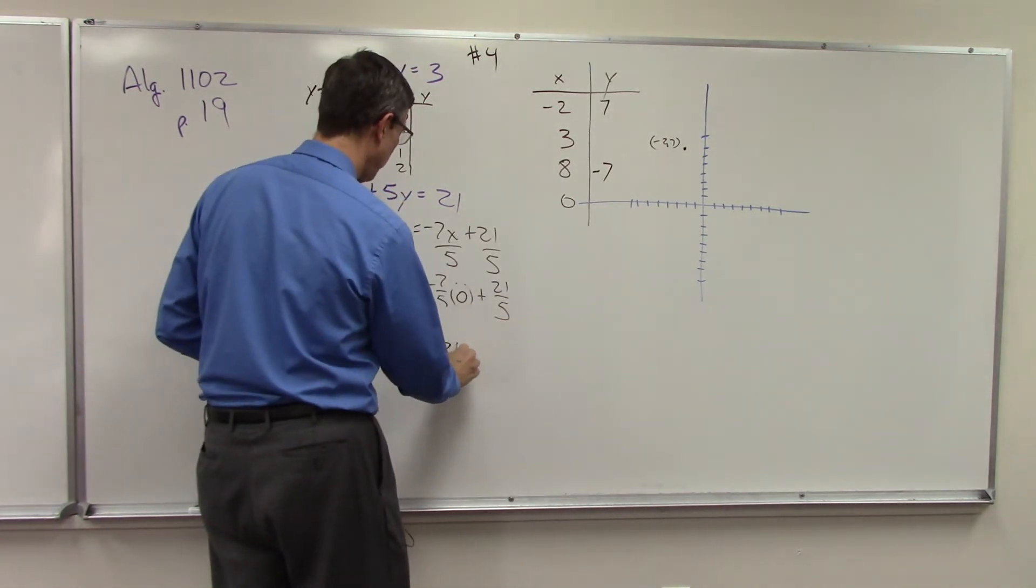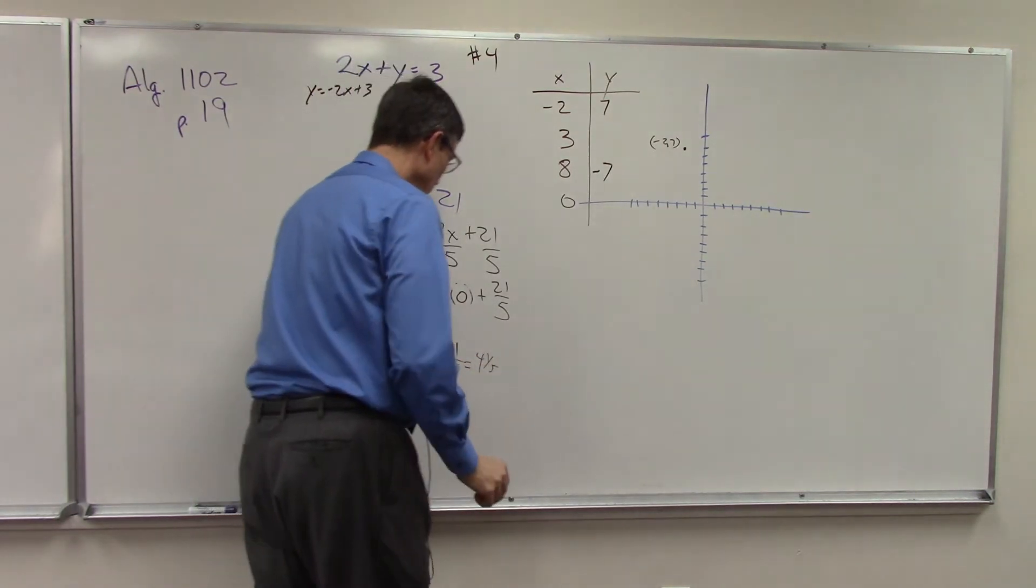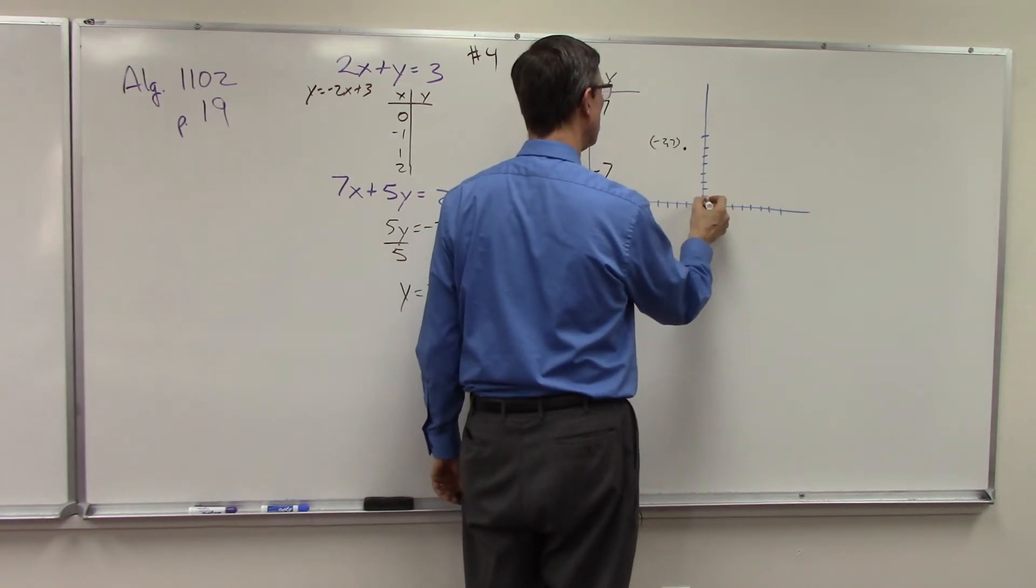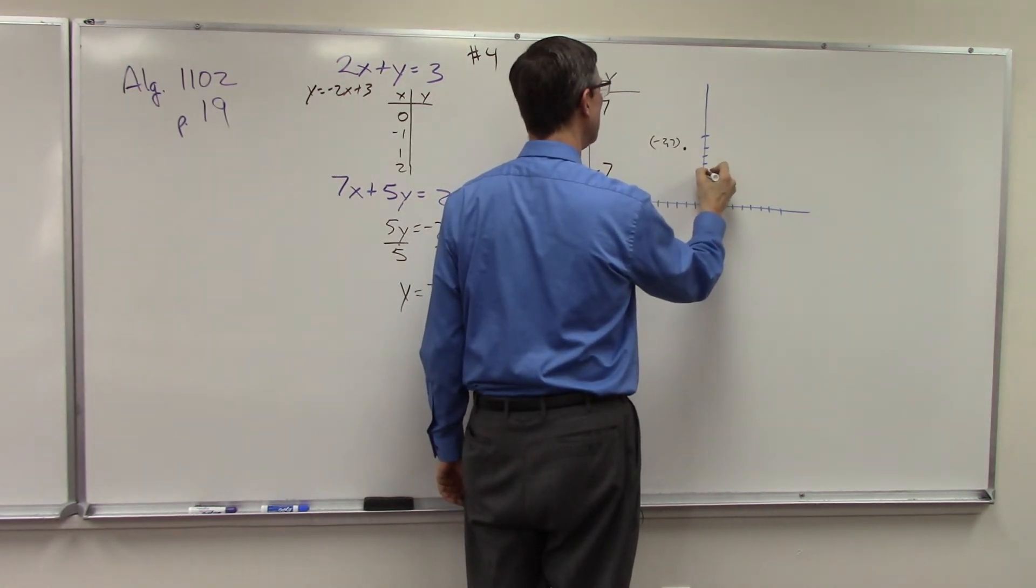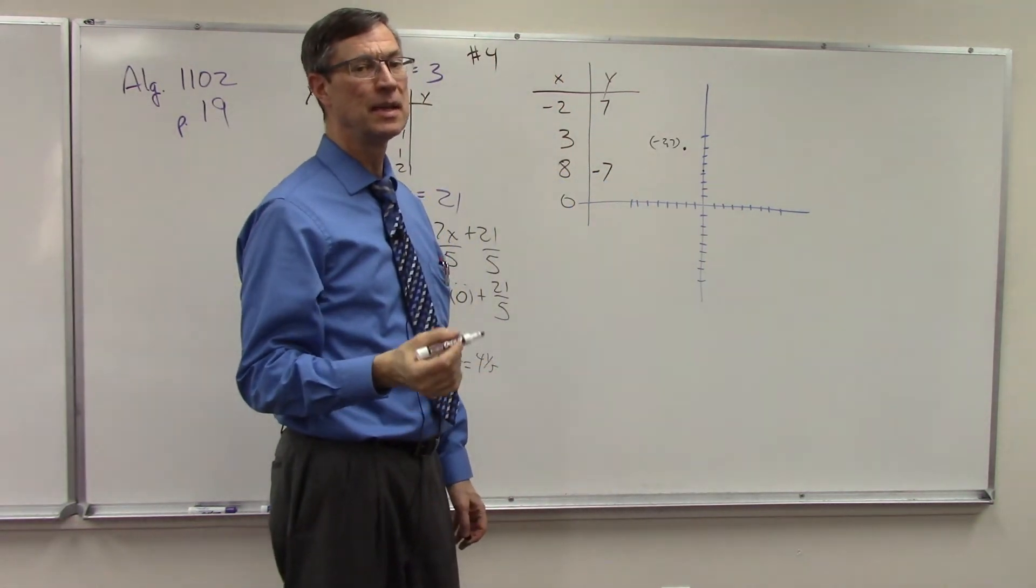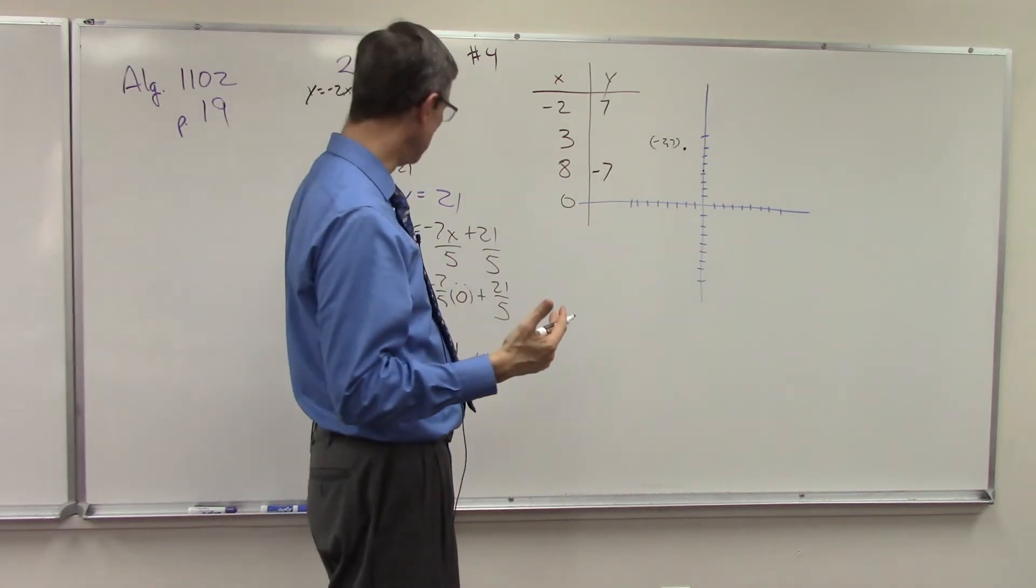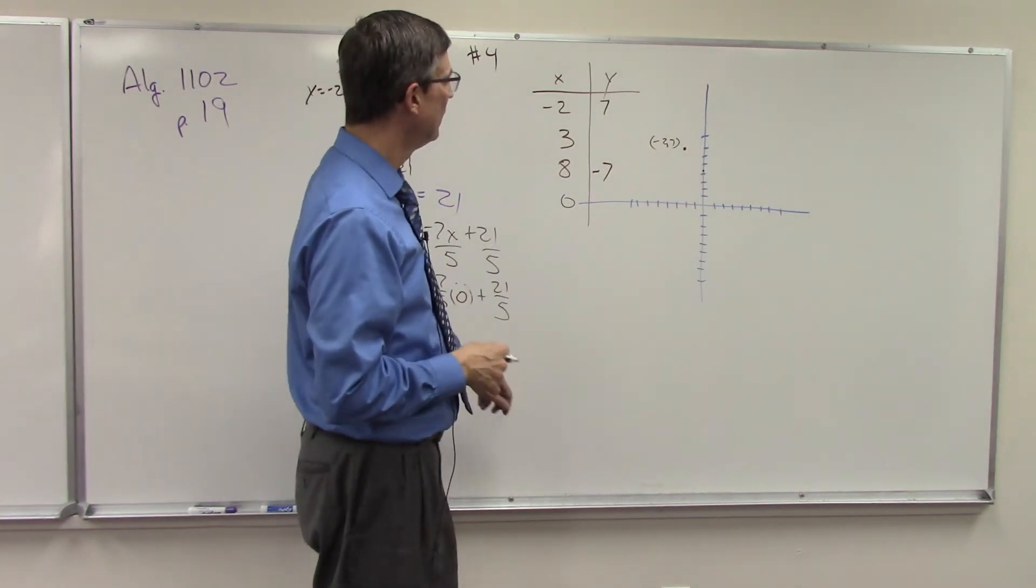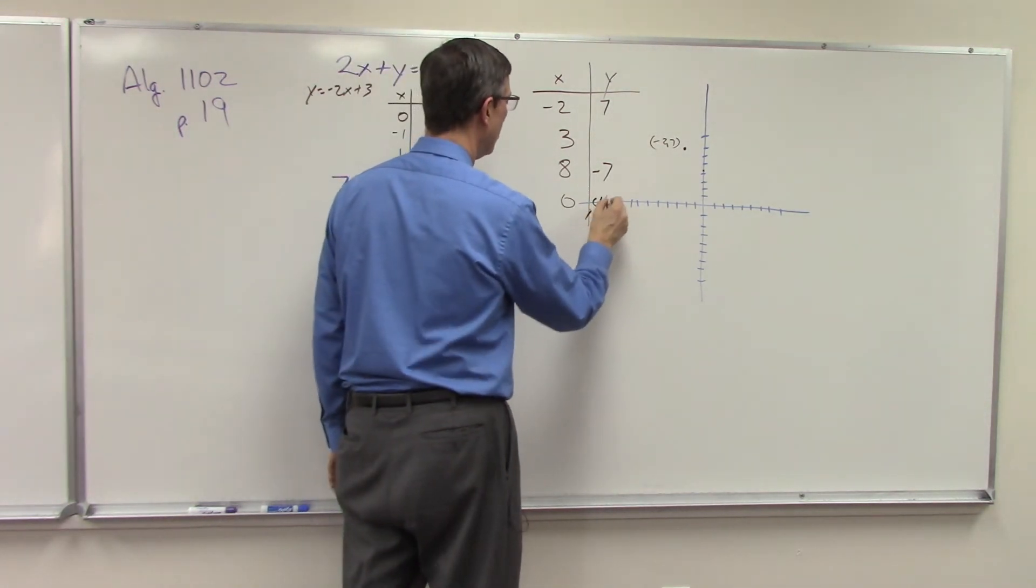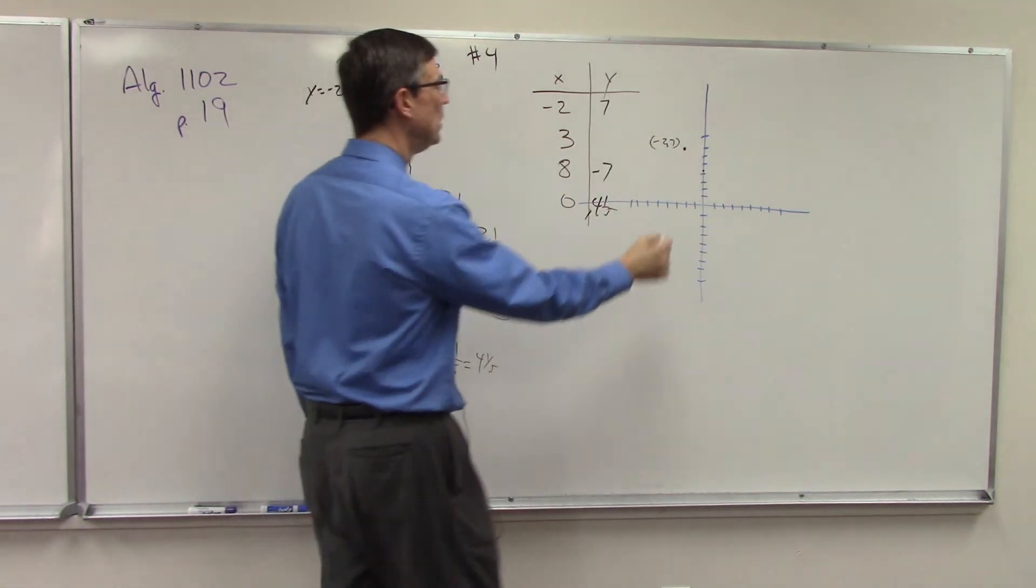So 21 fifths is the same as 4 and 1 fifth. So what that means is that this line at the 0 is going to cross at 1, 2, 3, 4, and just a little bit above. But it's just, it's not as easy and it's hard to be confident graphing fractions. But 21 fifths is 4 and 1 fifth, and technically the point 0, kind of 4 and 1 fifth, would be right here.